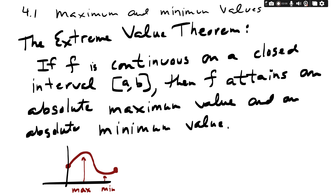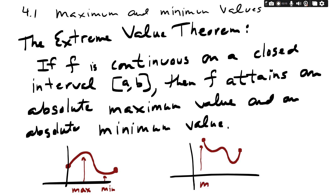The max or min could happen in the middle of the graph, or it could happen at the endpoints. In this example the beginning value is the maximum, and somewhere along the line we have a minimum value. Think of it this way: if you draw a curve with your pencil without lifting it, starting at one end and finishing at another, you will somewhere have a maximum and a minimum.